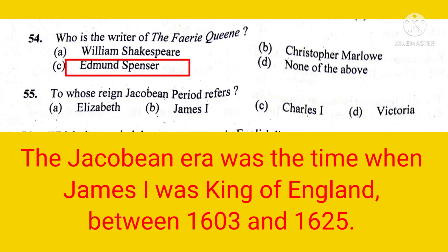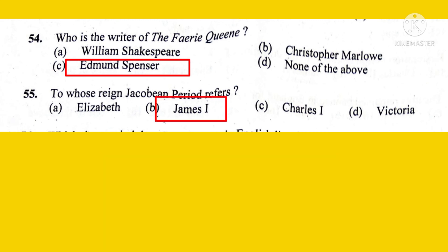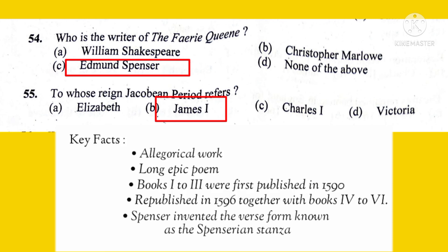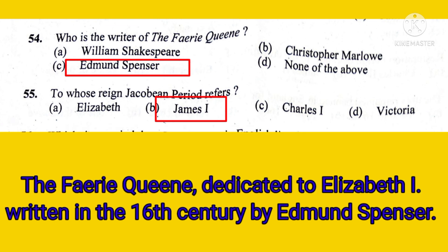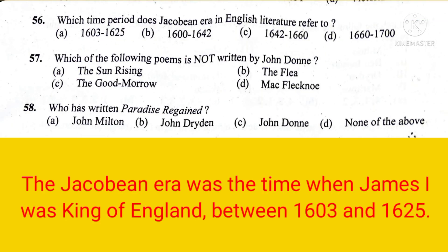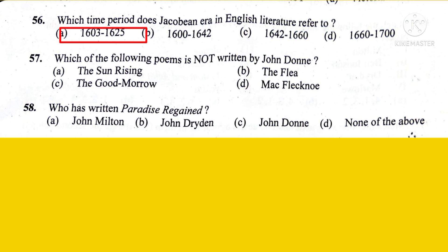Who is the writer of The Faerie Queene? The right option is Edmund Spenser. To whose reign does the Jacobean period refer? The right answer is Option B, James I. The Faerie Queene is an allegorical long epic poem in 6 books. Books 1 to 3 were published in 1590 and republished in 1596 together with Books 4 to 6. Spenser invented the verse form known as the Spenserian stanza. The Faerie Queene is dedicated to Elizabeth I and was written in the 16th century. The Jacobean era refers to 1603 to 1625.